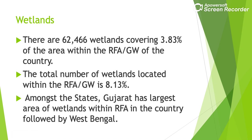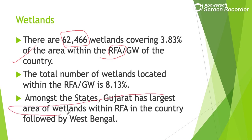Regarding wetlands, there are 62,466 wetlands, which is 3.83% of the recorded forest area of the country. Gujarat has the largest area under wetlands.